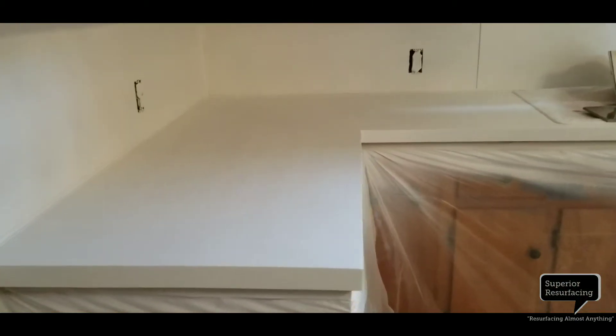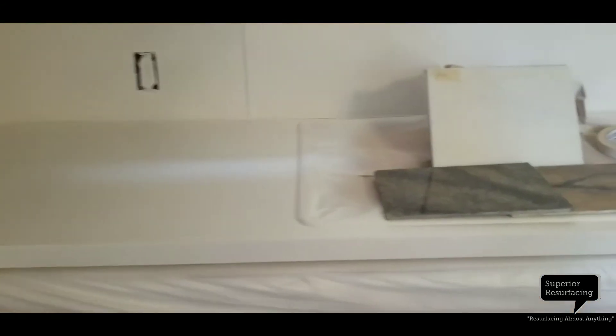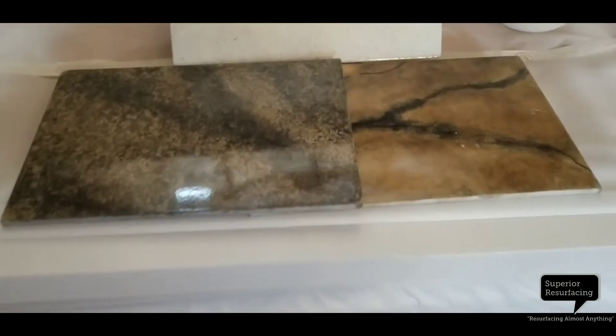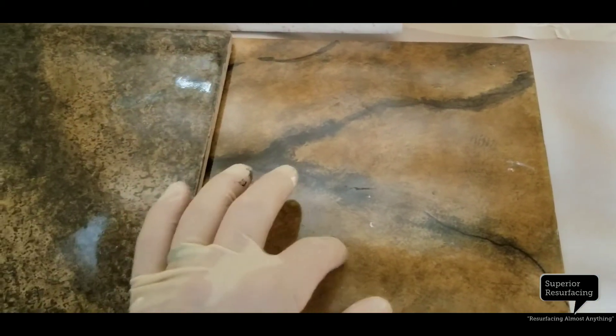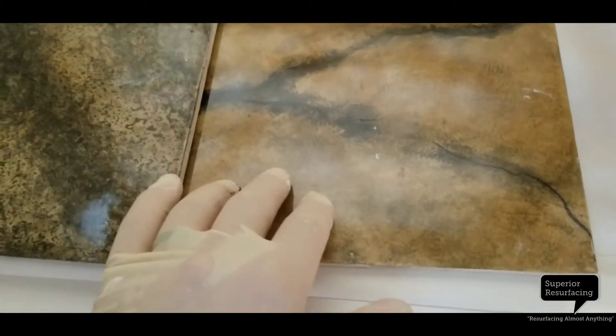Alright guys, our primer is on and this is pretty much what we're going to be looking at. We're going to be doing the hand stained epoxy on the countertop. The primary color being this kind of tan, this topaz tan here that's in the background is going to be our dominant color for the top.